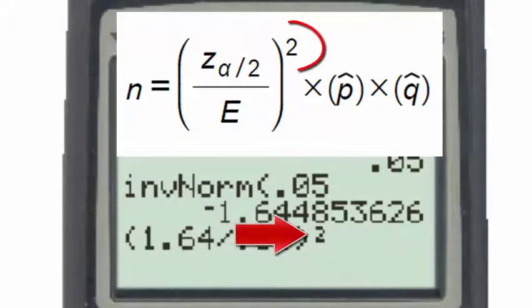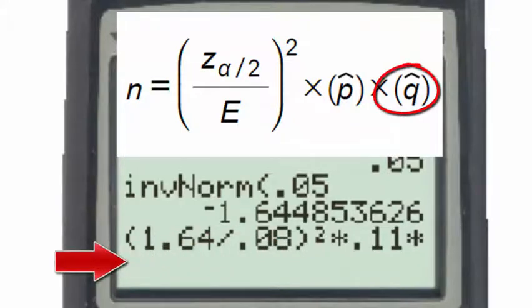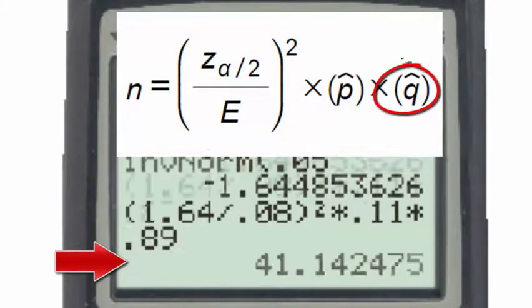Then x squared, squaring that quantity. Now we'll multiply that by 11 percent, 0.11, which is p hat, and then multiply that by q hat, which is 1 minus p hat, 0.89. And when we hit enter.